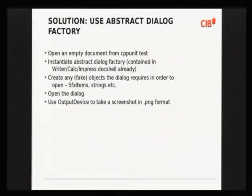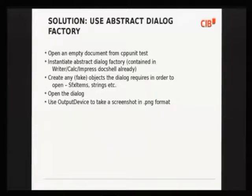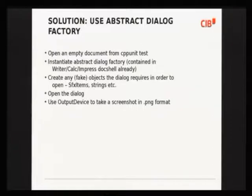So we suffered from the not-invented-here syndrome and implemented our own framework — well, not entirely our own, but we decided to build on CppUnit tests, which solved the debuggability issues, since it was easier for us to debug C++ CppUnit than Python with UNO. What we're doing is opening an empty document in a CppUnit test. Every document comes with a document shell, and most document shells come with an abstract dialog factory — at least Calc and Impress do; Math doesn't. To open a dialog, some can be opened directly, but some need input data such as SFX item sets or strings. Our framework fakes or creates those objects and supplies them through the abstract dialog factory to open the dialog.